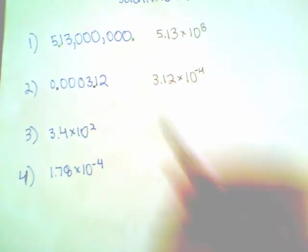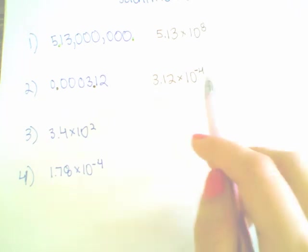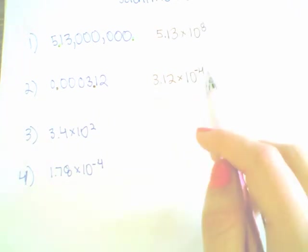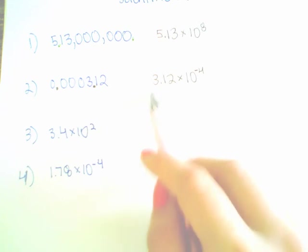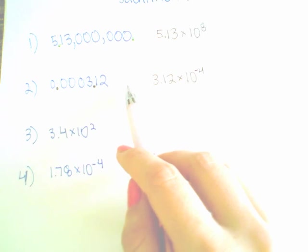So you can double check your work. If you move this back 4 places, the negative implies that you move the decimal place backwards. 1, 2, 3, 4, you'd have .000312.